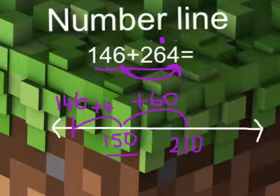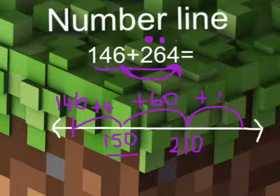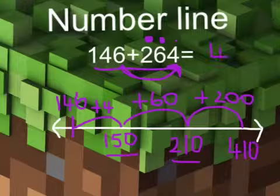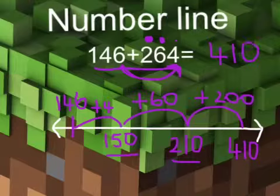Now I just need to add my hundreds column of 200. So I'm going to do a jump of 200. 200 plus 210 is 410. And that's the total of my answer, 410. And I did that using a number line.